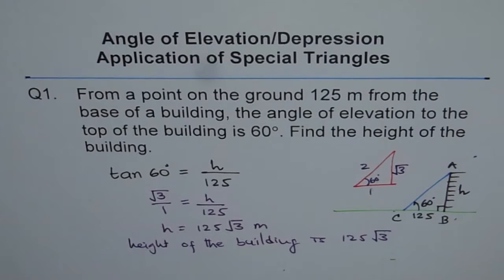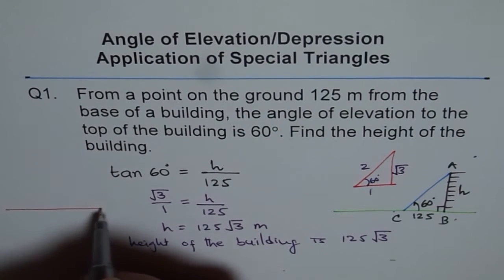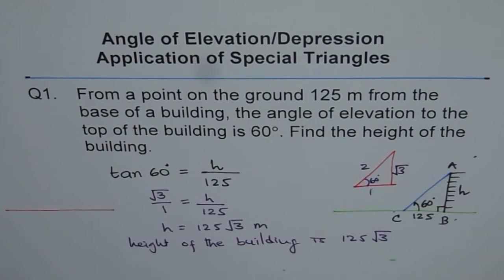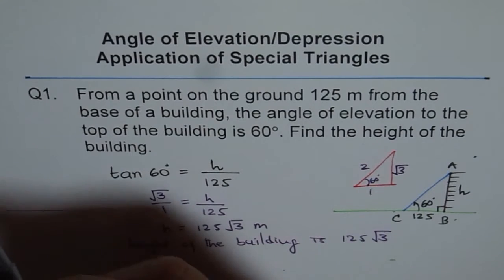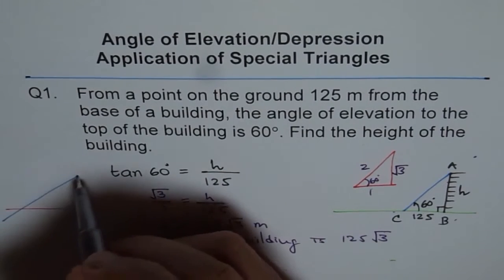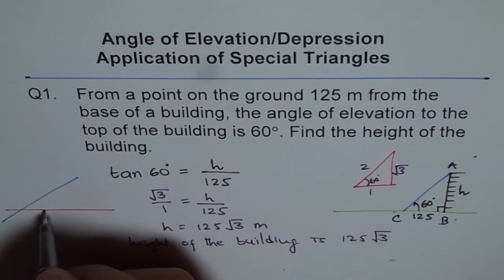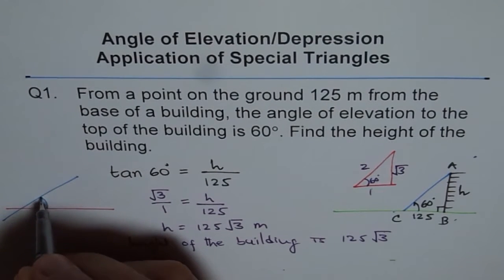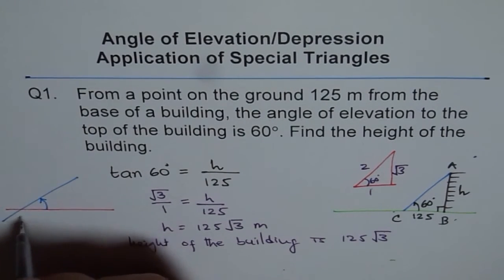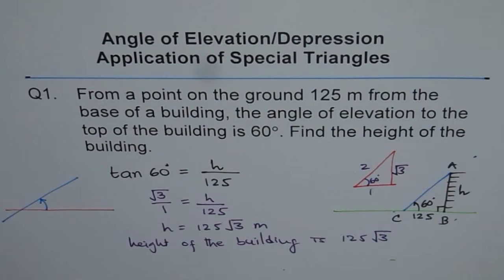To summarize: the angle of elevation is always measured from the horizontal looking upwards — it is the angle between the horizontal and the line of sight when looking up.